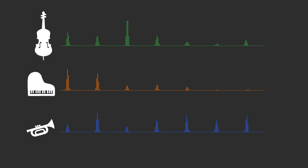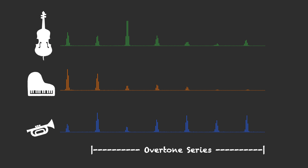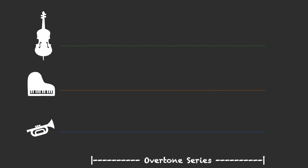And what's really cool is that all of these frequencies line up regardless of the instrument. Here's the fundamental, the octave, the fifth, the next octave, the third, and so on and so forth. This pattern is called the overtone series. And what gives an instrument its unique sound, or timbre, is just the differing volumes of these frequencies. That's it!